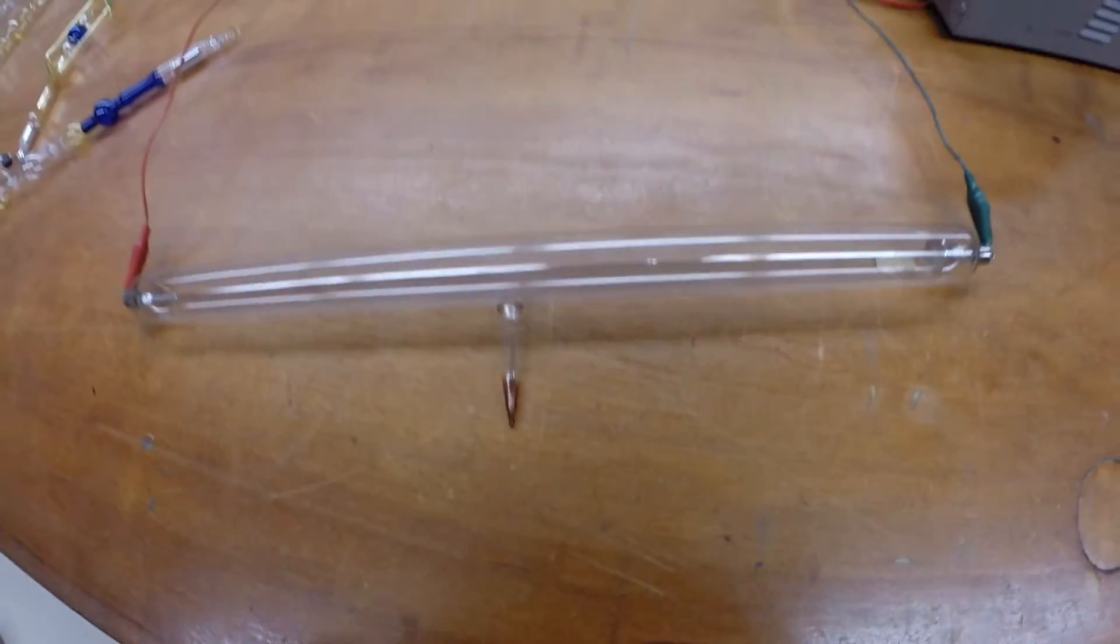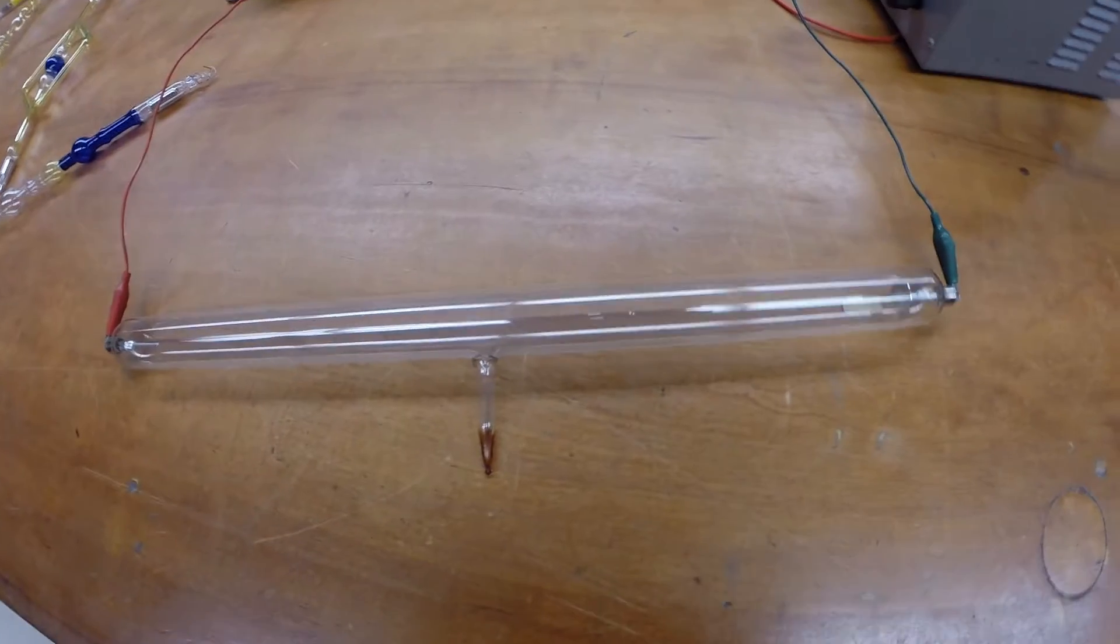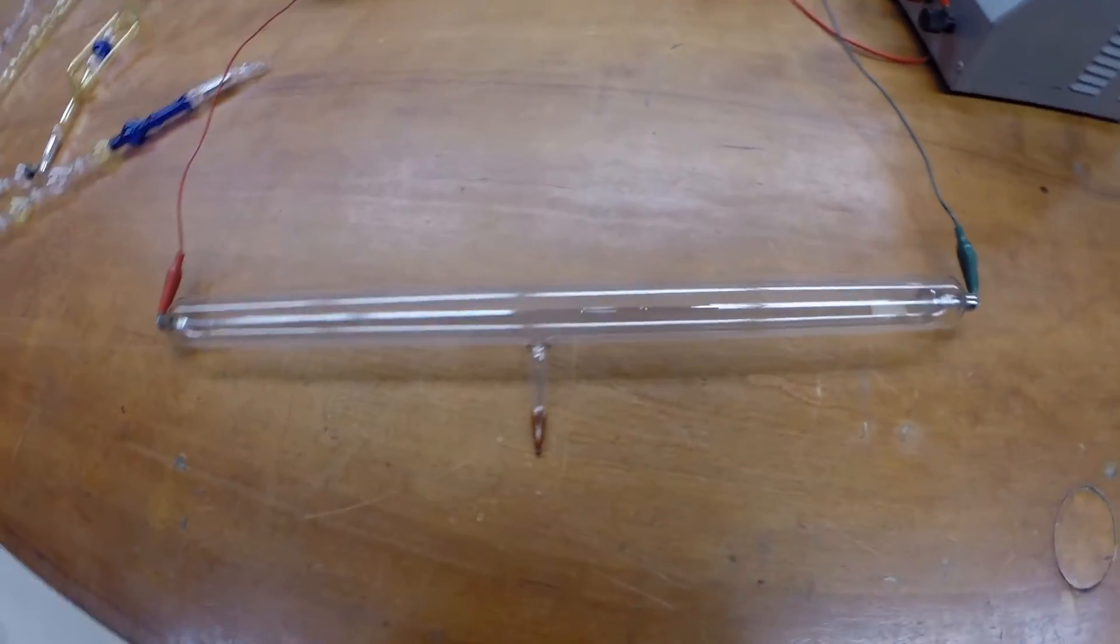This next one is just a simple cathode ray tube, cathode and anode on either side. We'll get a nice beam of electrons in the tube when we light it up.